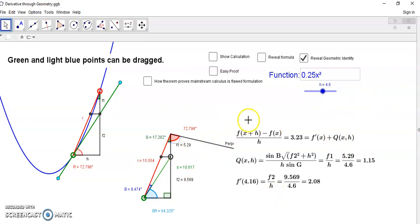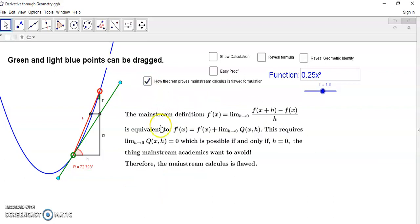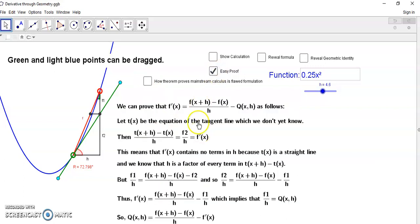I showed you how to do this in the main article but that's a little more difficult proof with a lot of trigonometry. I've got a very simple proof now that I want to show you. We can prove that this is true as follows: we can say let tx be the equation of the tangent line which we don't yet know. Then we can say that t of x plus h minus t of x over h is going to be the slope of the tangent line, in other words the derivative.